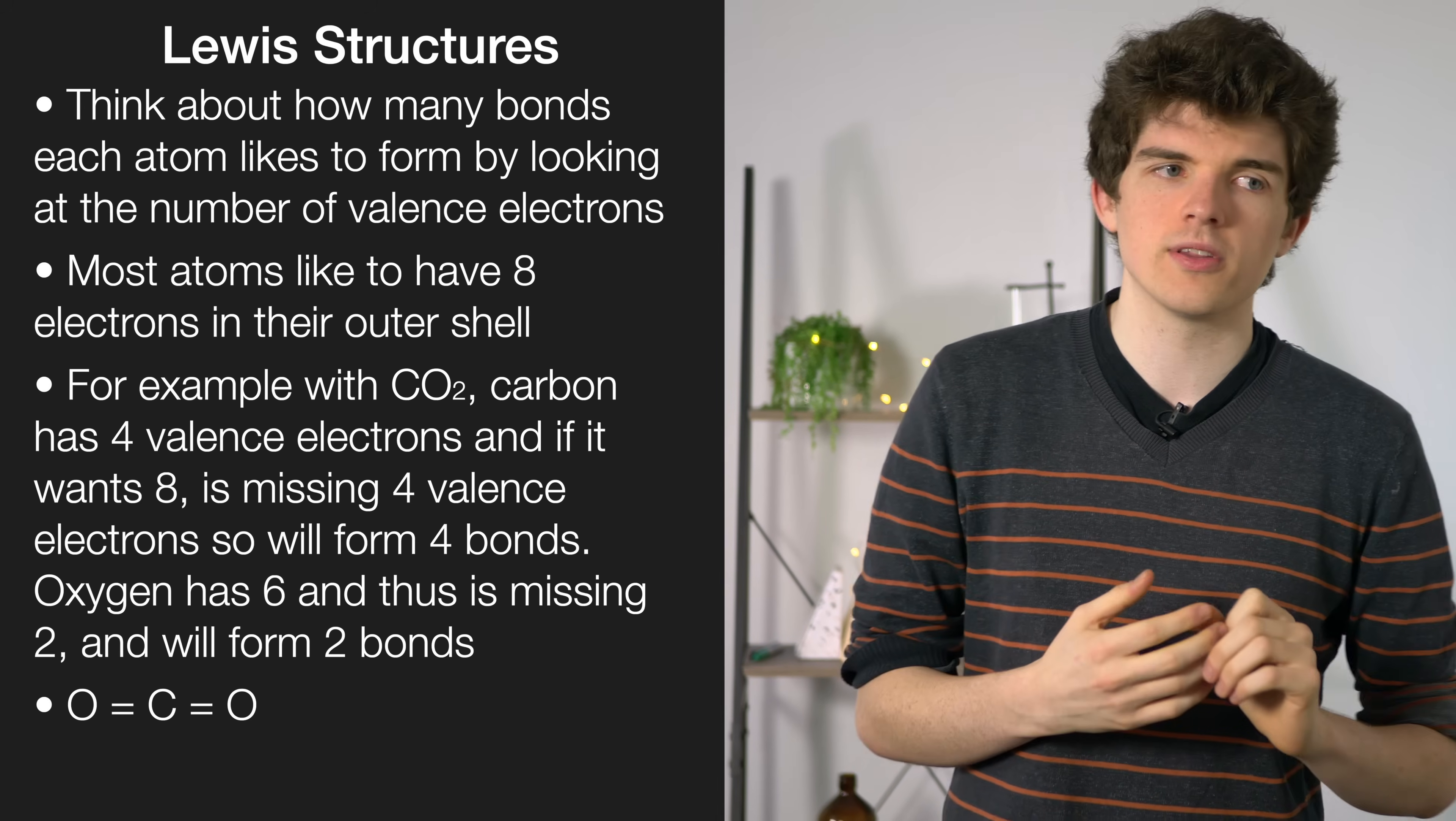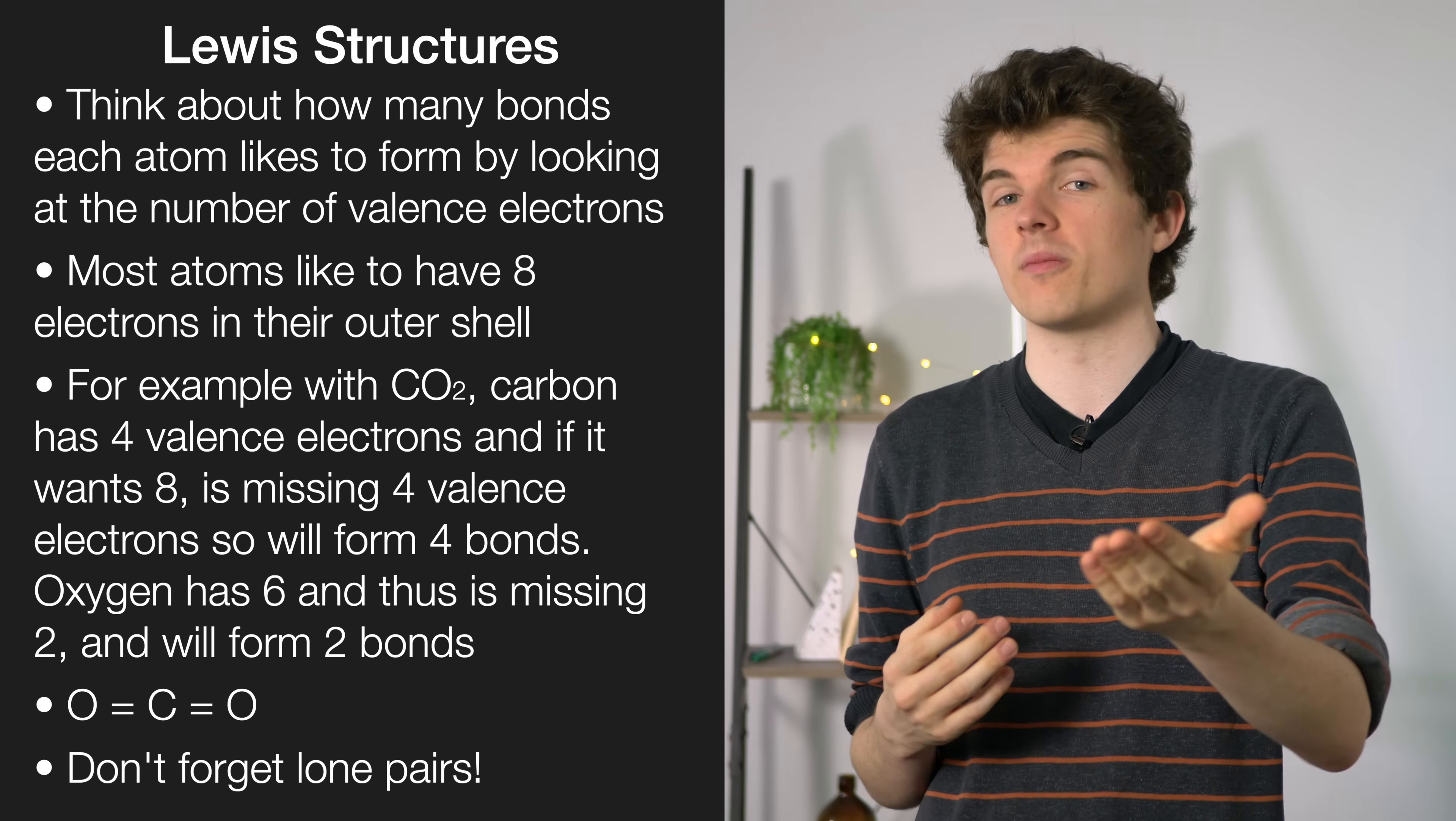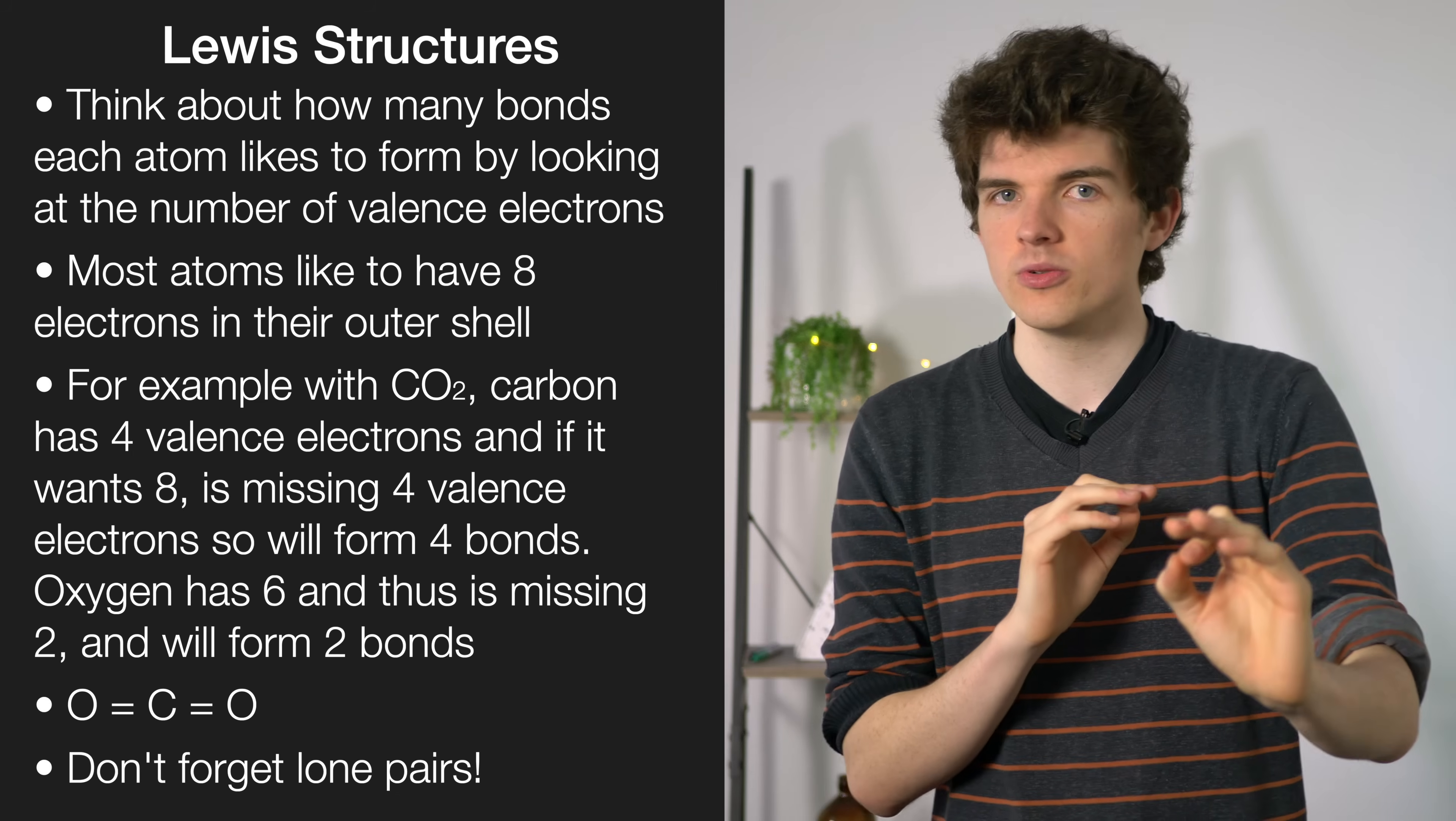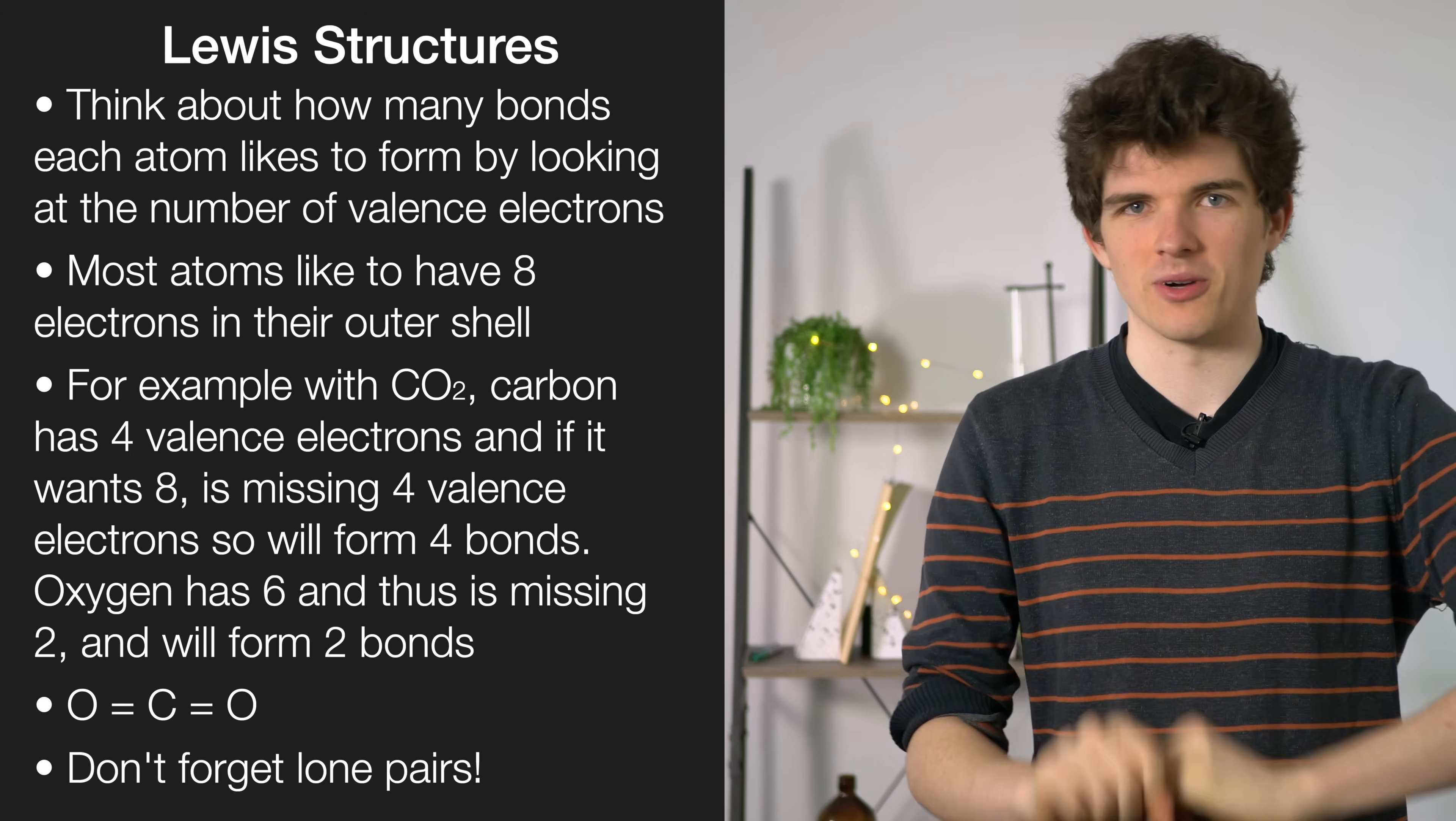One thing to remember with Lewis structures is to always draw your lone pairs on the Lewis structures, or else you will not be marked correct. There are a few exceptions to that rule, by the way. Beryllium only forms two bonds and boron forms three bonds.